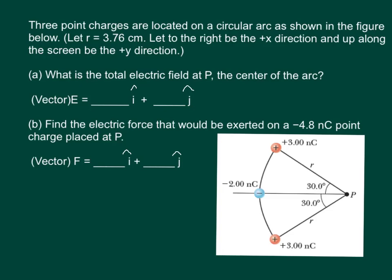The question says three point charges are located on a circular arc as shown in the figure below. Let the radius equal 3.76 centimeters. Let to the right be in the positive x direction and up along the screen be the positive y direction. What is the total electric field at P, the center of the arc? And B, find the electric force that would be exerted on a negative 4.8 nanocoulomb point charge placed at P.